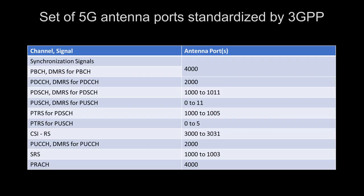Regarding antenna ports, a table summarizes the full set of 5G antenna ports standardized by 3GPP. For example, synchronization signals and the PBCH DMRS use antenna port 4000. The table shows which signal or channel uses which antenna port.